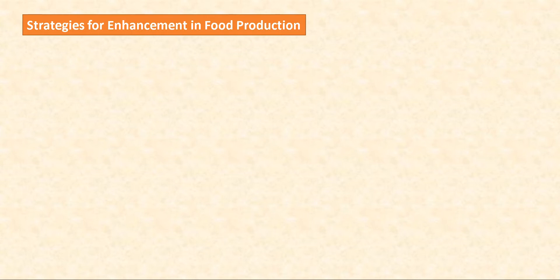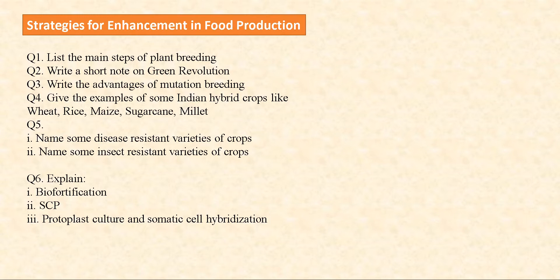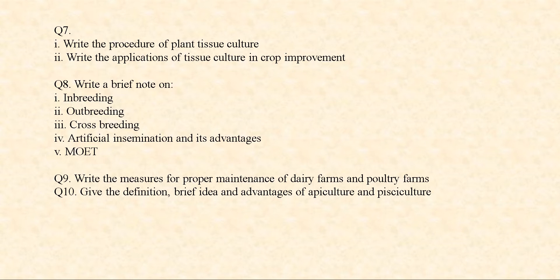The second chapter of this unit is Strategies for Enhancement in Food Production. You need to read the main steps of plant breeding, a short note on the Green Revolution, and the advantages of mutation breeding. Give examples of some Indian hybrid crops like wheat, rice, maize, sugarcane, and millet. Name some disease-resistant varieties of crops and some insect-resistant varieties of crops. Then explain biofortification and SCP — that is, single cell protein — followed by protoplast culture and somatic cell hybridization. Also write the procedure of plant tissue culture and its applications in crop improvement.